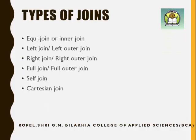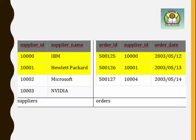These are the six types of joins. First is equi join or inner join, then left join or left outer join, right join or right outer join, full join or full outer join, self join, and cartesian join. When asked to explain the types of joins, you have to explain all six types. Now we will see each one by one.